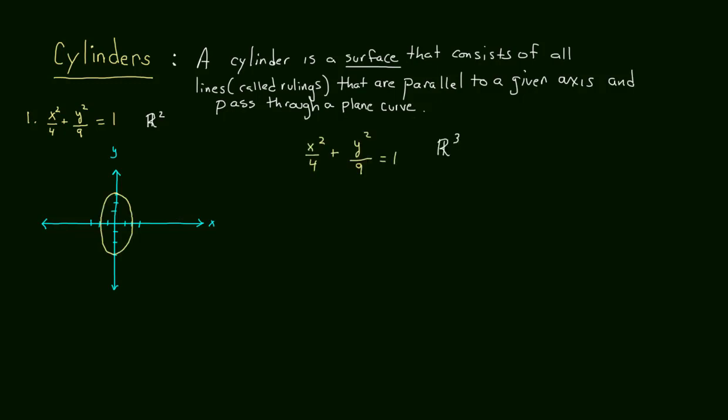Now suppose I ask you to graph this in R3, three-dimensional space. Then it takes on a whole different shape. There is no z here, so we think of x squared over 4 plus y squared over 9 equals 1. That relationship is going to hold for all of z.